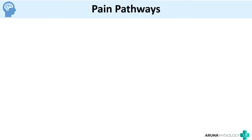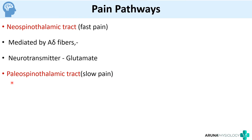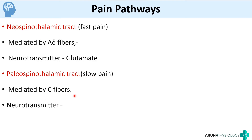There are two types of pain: fast pain and slow pain, each with its own pathway. The fast pain pathway is called the neospinothalamic tract — neo means new. It is mediated mainly by A-delta fibers and the neurotransmitter involved is glutamate. The slow pain pathway is called the paleospinothalamic tract, mediated by unmyelinated C fibers, with substance P as the neurotransmitter — obviously slower because the fibers are unmyelinated.